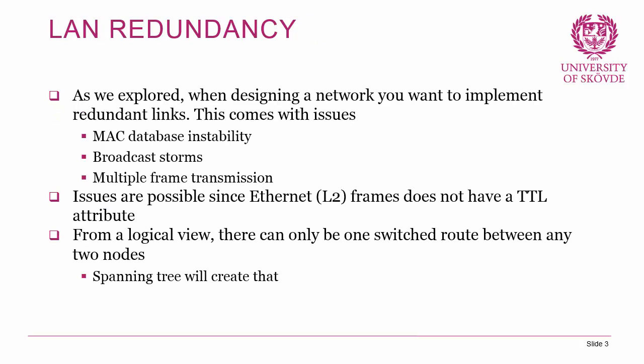When you design your network, you want to implement redundant links because you don't want every host connected to one switch to fail if that switch's link to the upper layer fails. So you have two or more connections to upper layers, but this comes with issues: MAC database instability, broadcast storms, multiple frame transmission, and more. These issues exist because Ethernet Layer 2 frames do not have a Time to Live attribute. Unlike an IP packet, which gets its TTL decremented at every router and eventually discarded, an Ethernet frame can loop indefinitely.